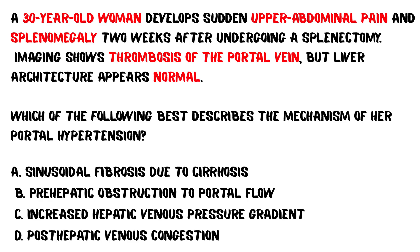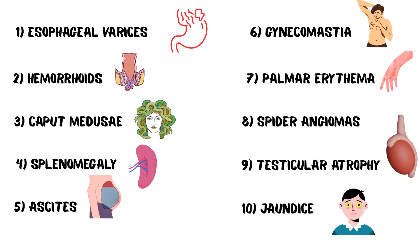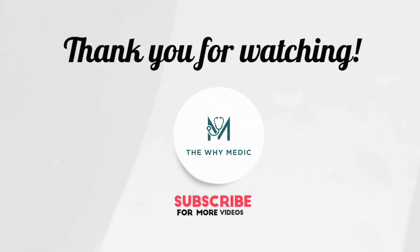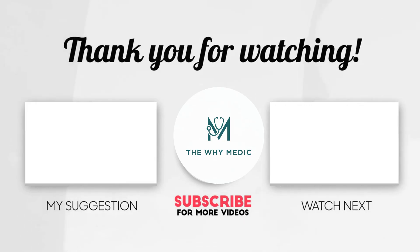Now let's go back to our clinical question. The answer is option B. The obstruction lies before blood reaches the liver, increasing portal pressure despite a normal hepatic parenchyma. In short, portal hypertension results from increased resistance and increased inflow within the portal circulation. It leads to varices, ascites, splenomegaly, and systemic features of liver dysfunction. Understand the mechanisms and you'll remember the complications for life. This is The Why Medic, simplifying hepatology. Subscribe for more high-yield topics.